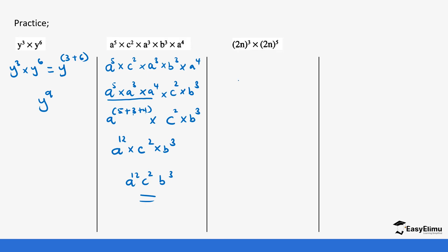In this example, the base is 2n. Adding the indices 3 plus 5 gives us 2n raised to power 8. You can also separate this as 2 raised to power 8 times n power 8. If you multiply 2 eight times you get 256, so you can write 256 times n power 8. Either form is an acceptable final answer.